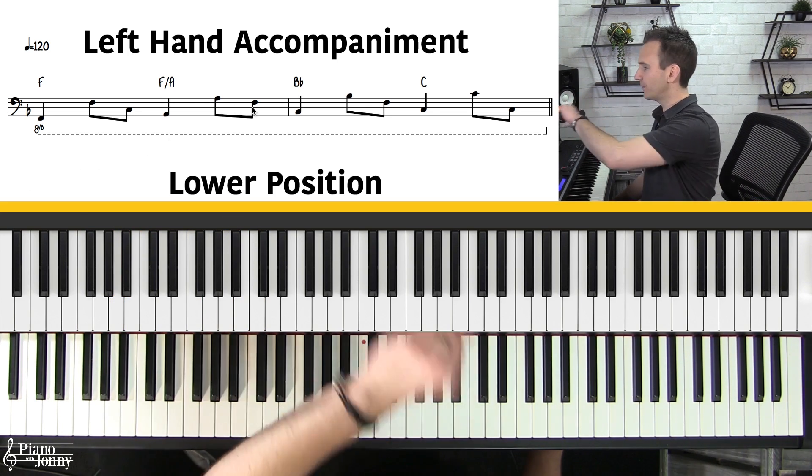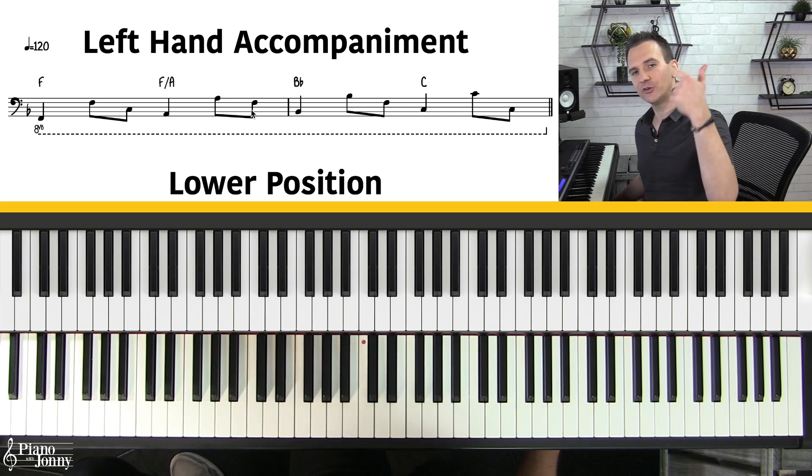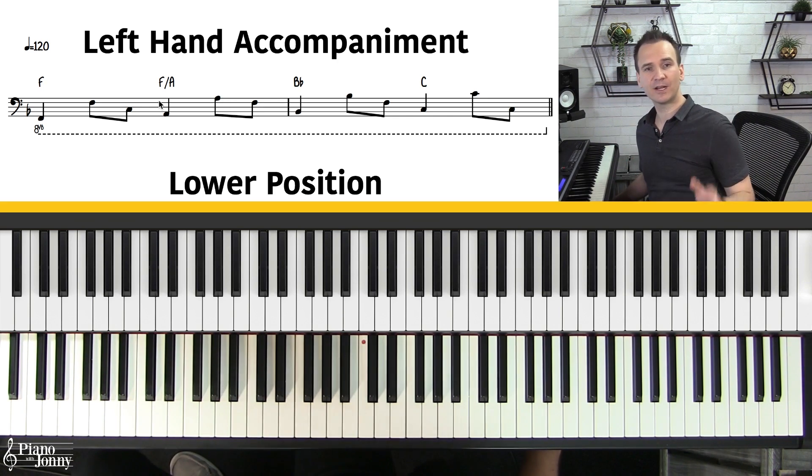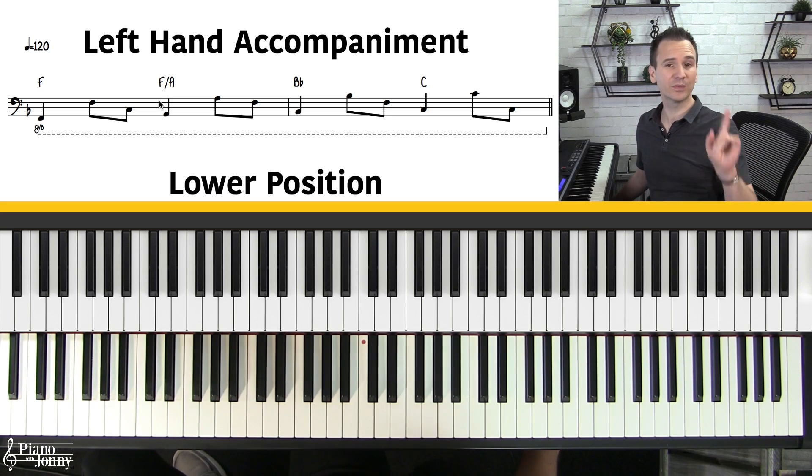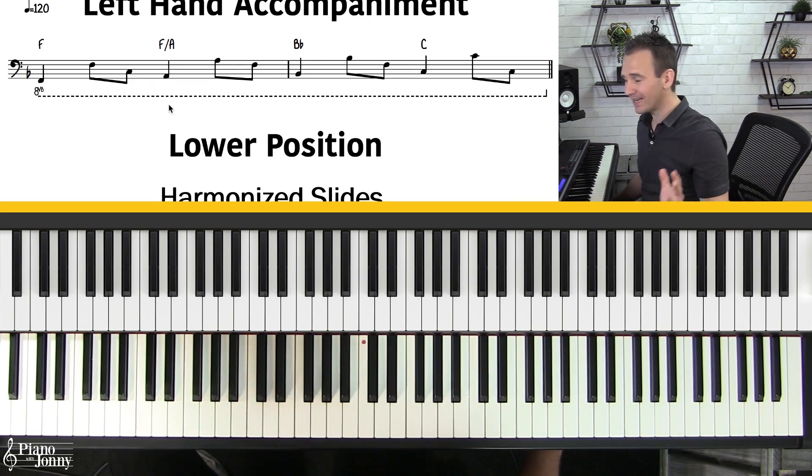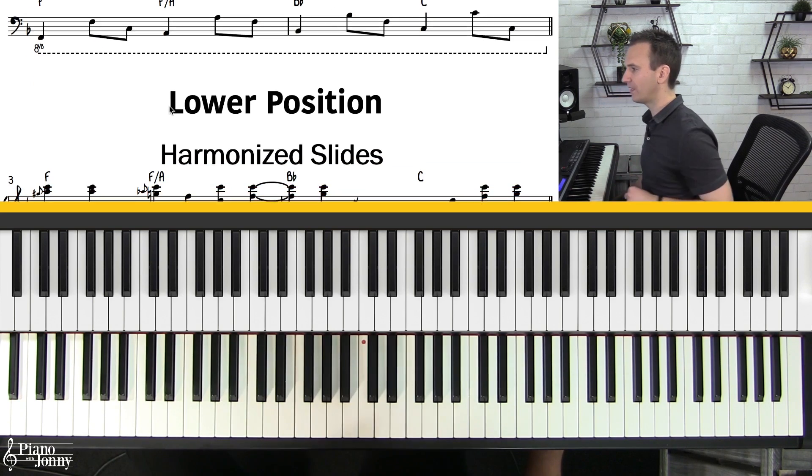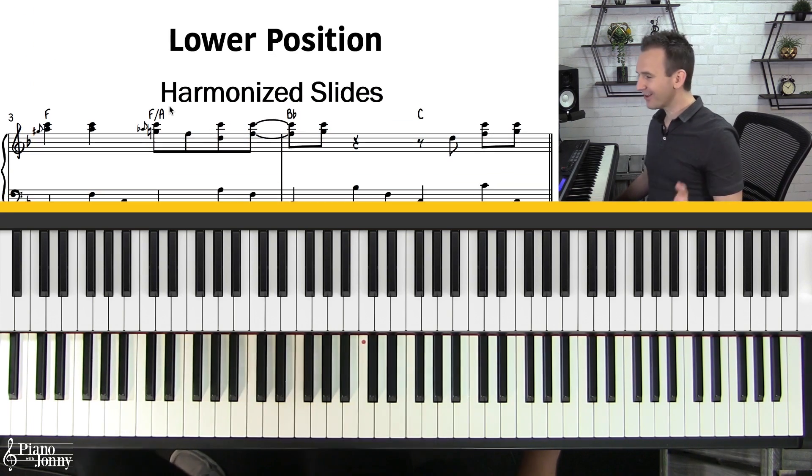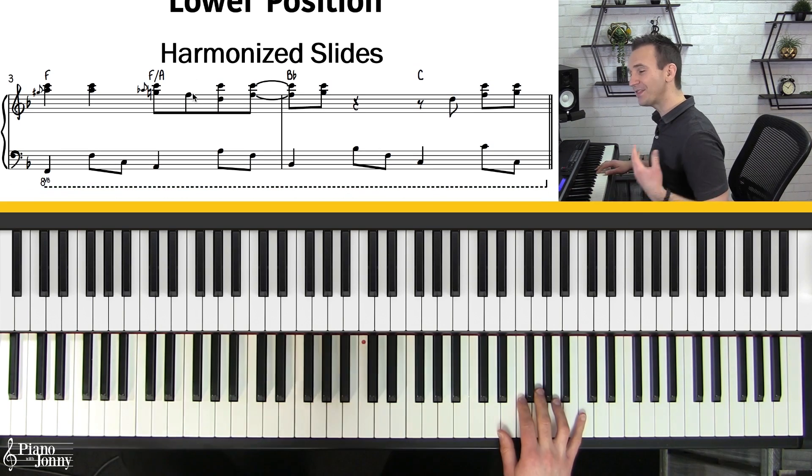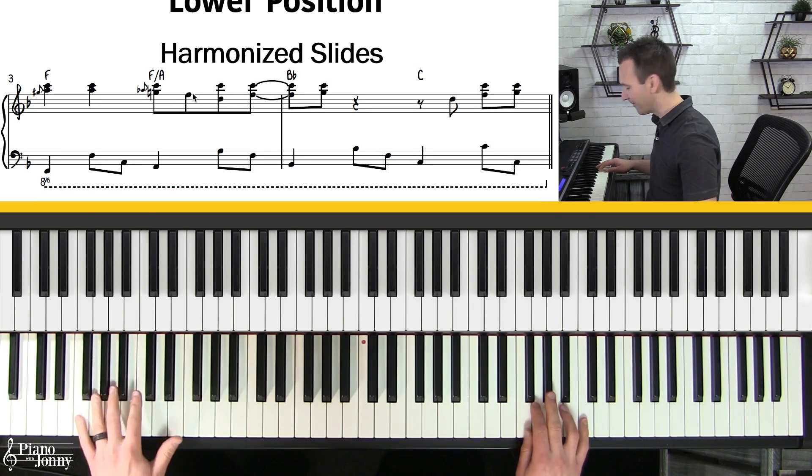I also want to mention that the lesson sheet music you're seeing up here in the top left of the screen is downloadable and printable. You can also check out our smart sheet music at piano with Johnny. It allows you to change the key with the click of one button so you can practice this in all 12 keys. I want to talk about improvisation, how do you improvise over this chord progression. I think one of the coolest sounds is the harmonized slide sound.